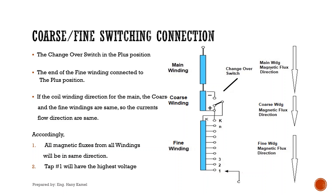For coarse-fine switching connection: if the changeover switch is in the plus position, the end of the fine winding is connected to the plus position. If the coil winding direction for the main, coarse, and fine windings are the same, the current flow directions are the same. Accordingly, all magnetic fluxes from all windings will be in the same direction. In this case, tap number 1 will have the highest voltage.